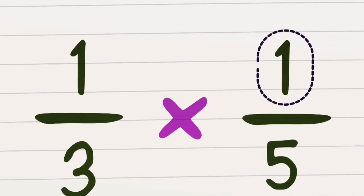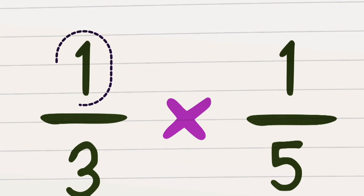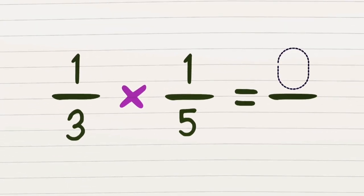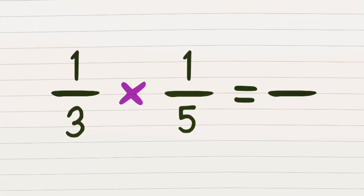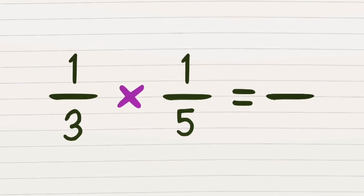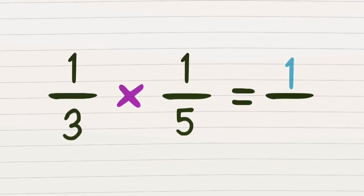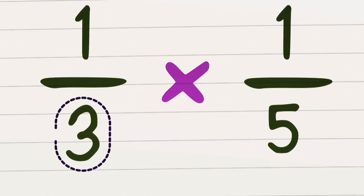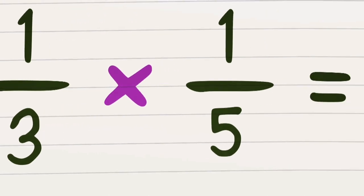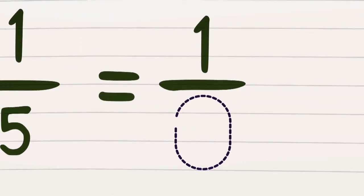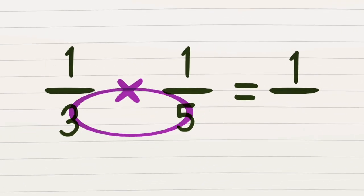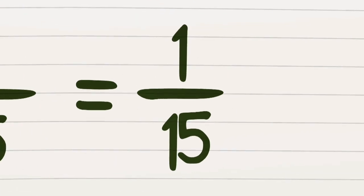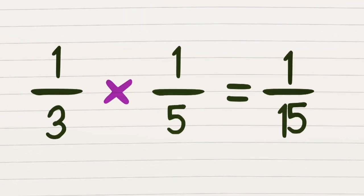Multiply the numbers on the top side together; whatever the solution, it becomes the numerator. And now we know the task that needs to be done: we got one times one, which is equal to one. Now multiply the numbers on the bottom side together — the answer that we get is now the new denominator. So three times five has become fifteen, which means the final answer must be one fifteenth.